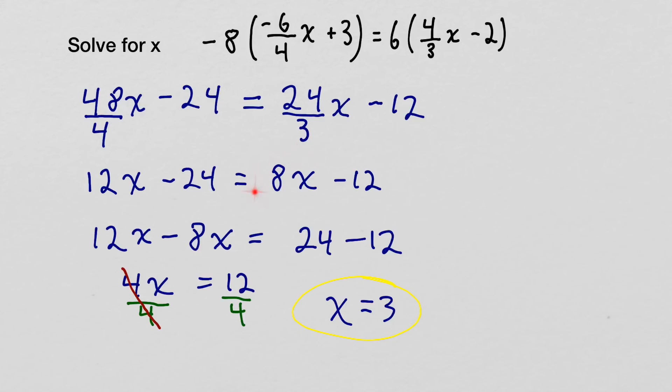So anytime I cross the sign, so this positive 8, when it moved to the other side here, became a negative. And when this 24 moved to the other side of the equal sign, it became a positive. From there, we just added like terms. And from here, we just divided both sides by the same number and simplified.